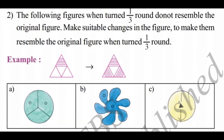Second main question: The following figures, when turned 1 by 3 round, do not resemble the original figure. Make suitable changes in the figure to make them resemble the original figure when turned 1 by 3 round.